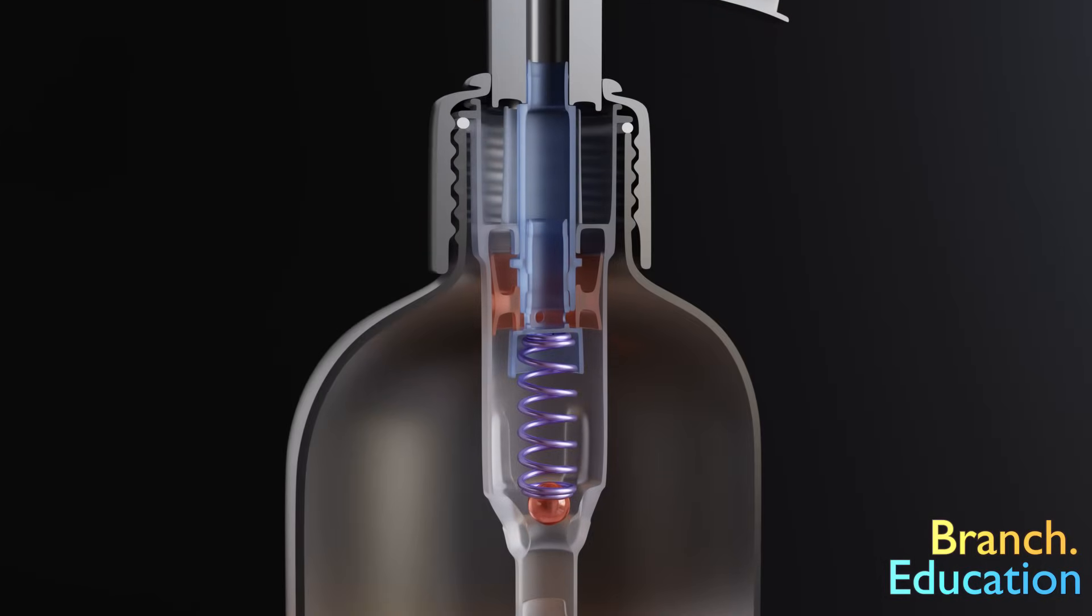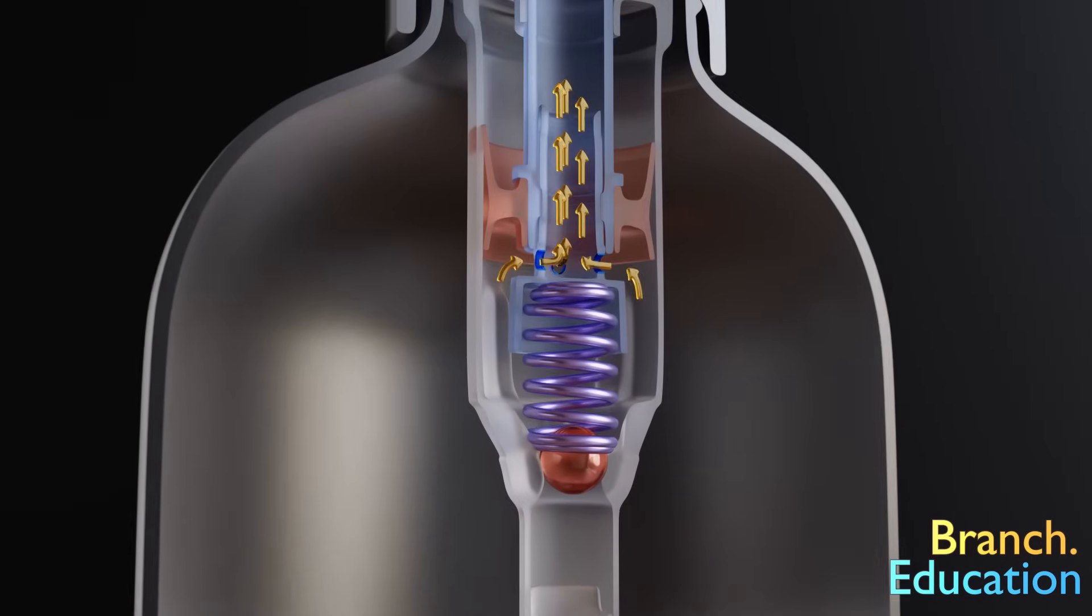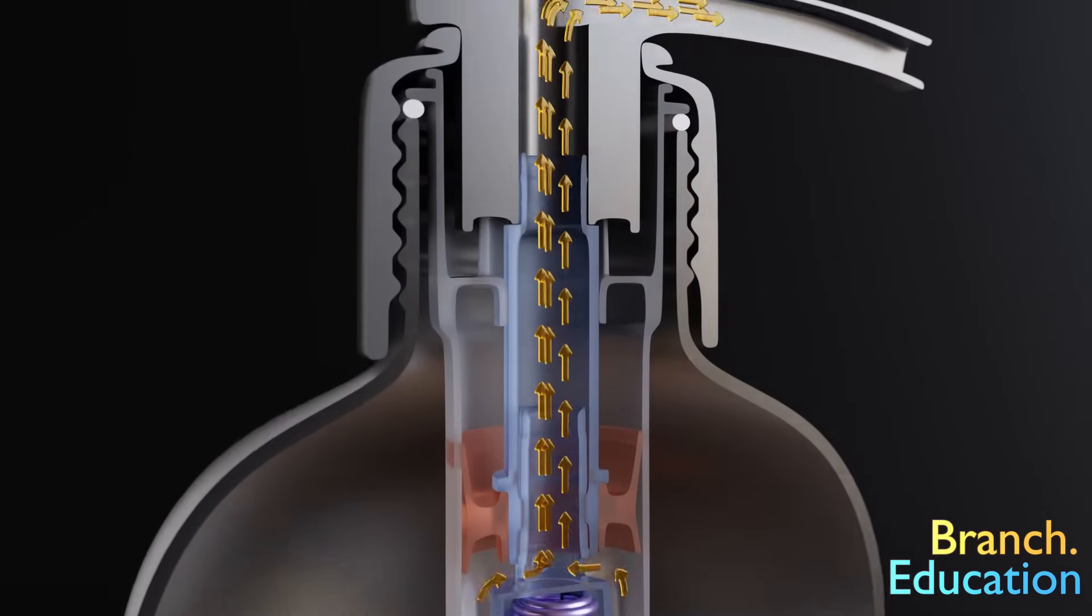Thus, as the piston is pressed down, the liquid goes up through these holes, through the center of the tube, and out the top.